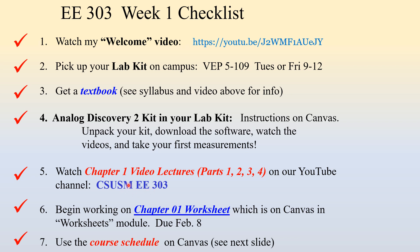Remember, for Chapter 1, like a lot of these chapters, they're broken up into several parts. There are actually four separate video lectures on YouTube called Parts 1, 2, 3, and 4. In conjunction with the video lectures, you can think about starting to work on the Chapter 1 worksheet — all the worksheets are posted on Canvas in the worksheets module. There's not a huge rush; the first worksheet is due on February 8th, so you've got a couple of weeks. Once you complete the worksheet, you will submit it electronically on Canvas in the assignments module.